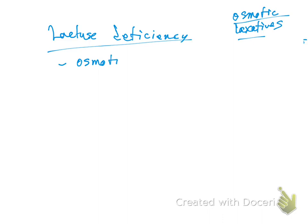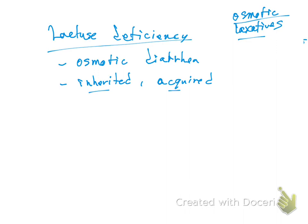The patient has osmotic diarrhea. Lactase deficiency could be inherited or could be acquired. If inherited, you will have it all your life. If acquired — for example, if you get any gastroenteritis or anything that affects your brush border in your GI system — you can get lactase deficiency, but eventually you can recover.